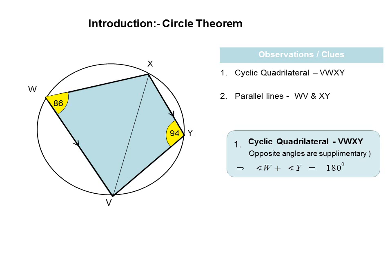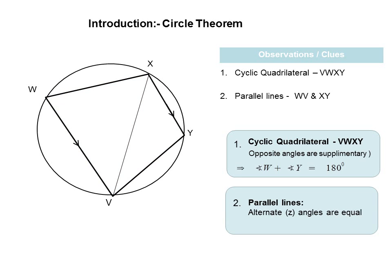In my second clue — the clue with parallel lines — the instant I see parallel lines it tells me I should look for an opportunity to apply the theory of alternate angles being equal, or Z angles. So I identify my parallel lines and I identify my Z, and therefore if angle WVX is equal to 48 degrees, then I expect that the alternate angle will be equal to 48 degrees as well. Two very simple clues, two very straightforward applications of very simple theorems.